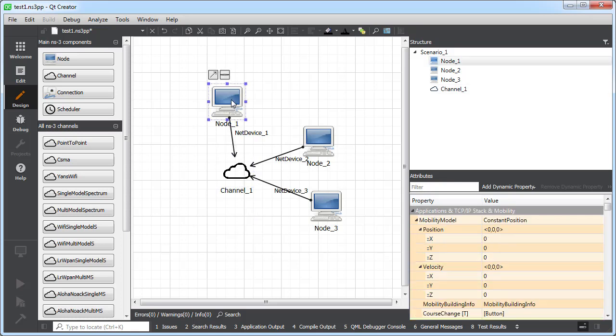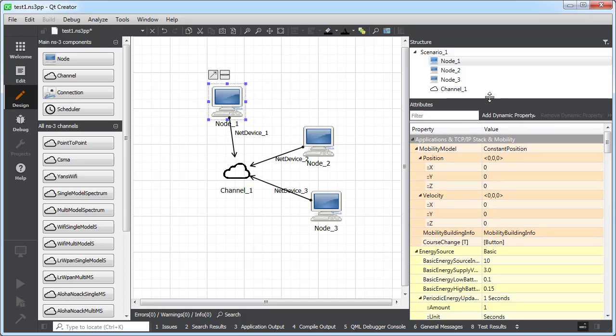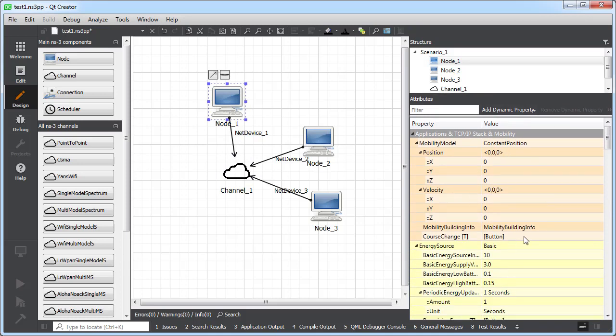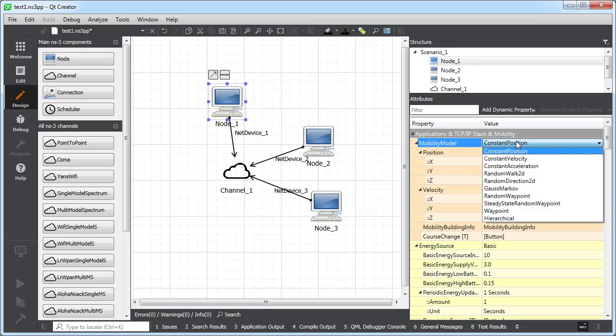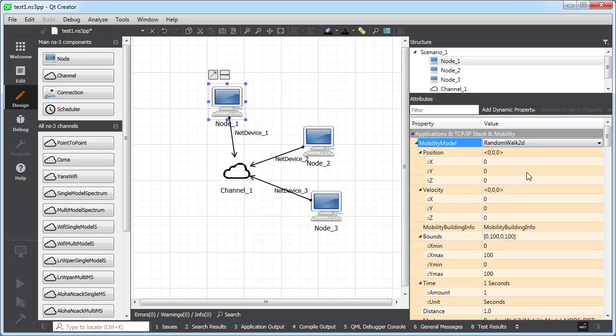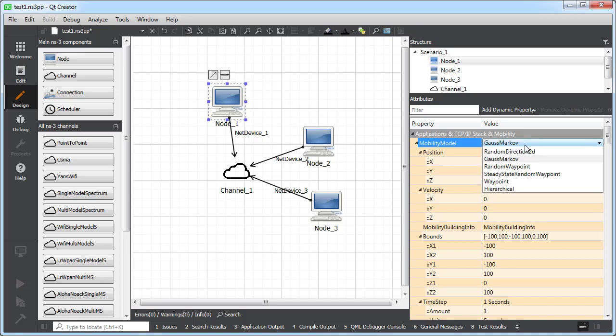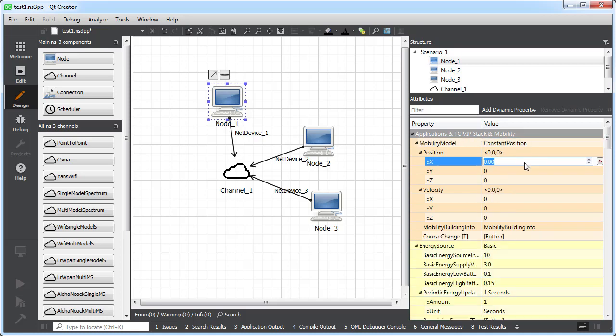If I select a certain node, I can see here the different attributes that I can set for that node, and I can change any of those attributes. For example, I could change the mobility model. I have the different choices available from NS3. I can select, for example, RandomWalk2D. I'm greeted with the different attributes for that mobility model. I can select Gauss-Markov, for example, different attributes. Or I can just set it to constant position. I can change any of those attributes to my liking.